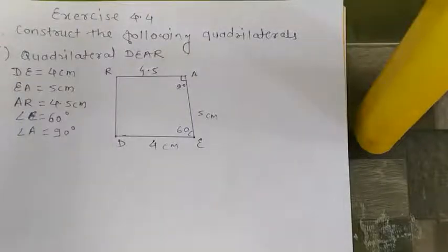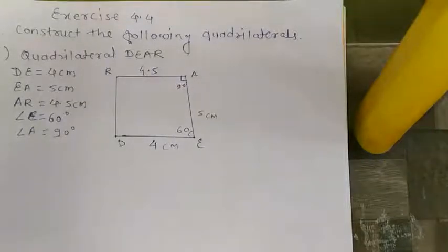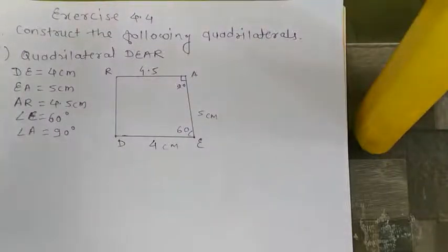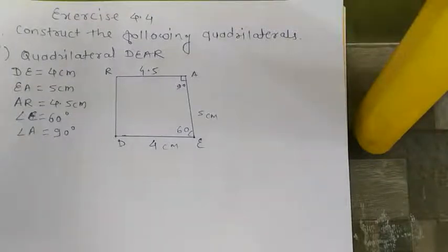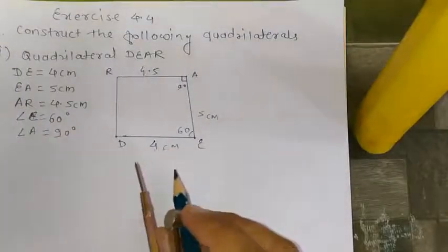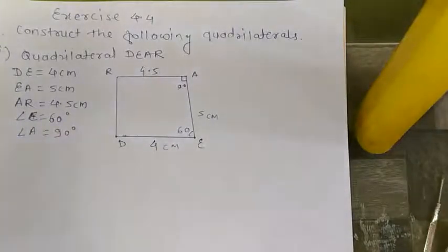Hello dear student. Now we are in the practical geometry of Exercise 4.4. Here we will complete some exercises according to the textbook. Our first question is: construct the following quadrilaterals. We have to design quadrilateral D, E, A, R.